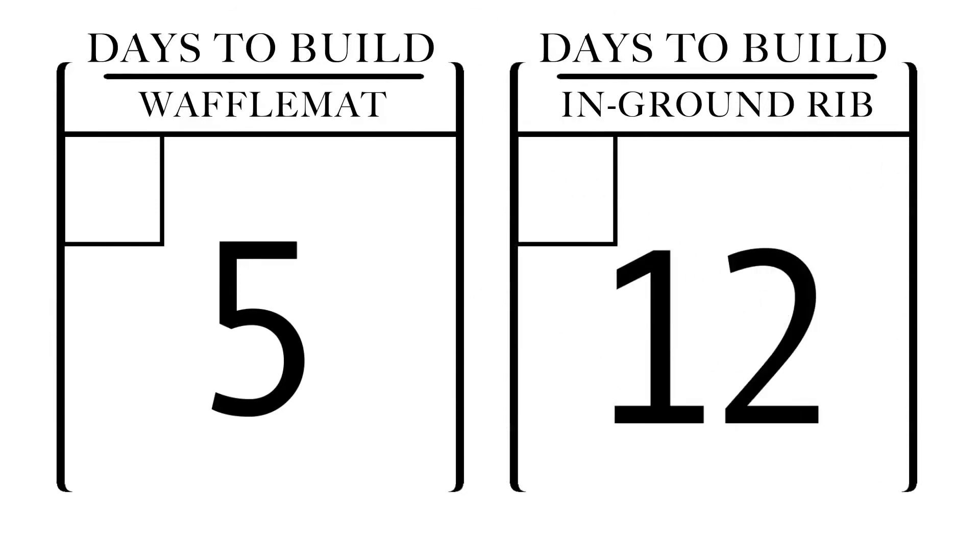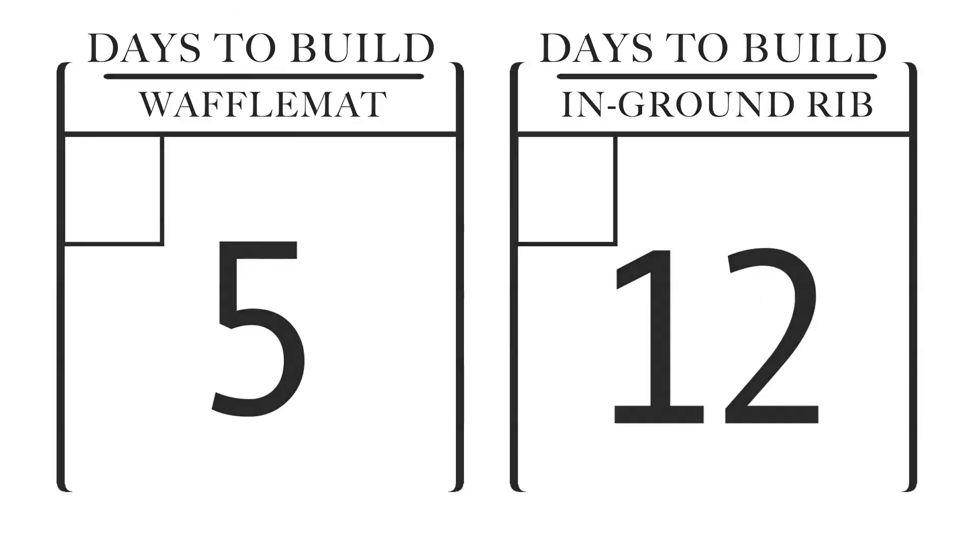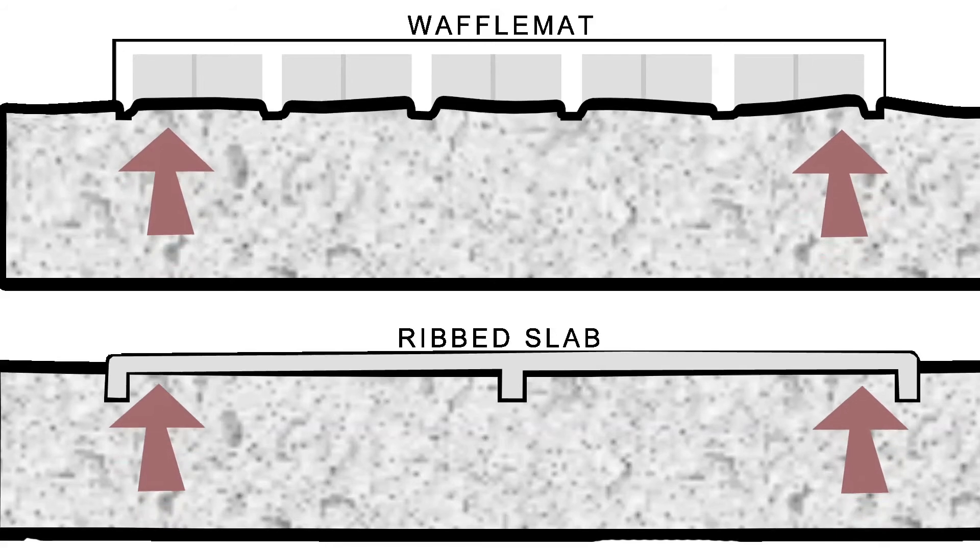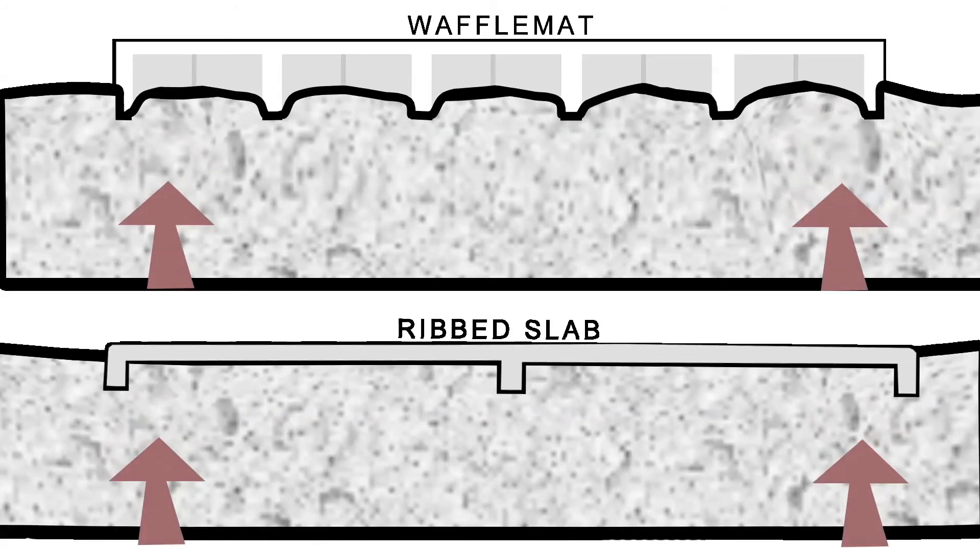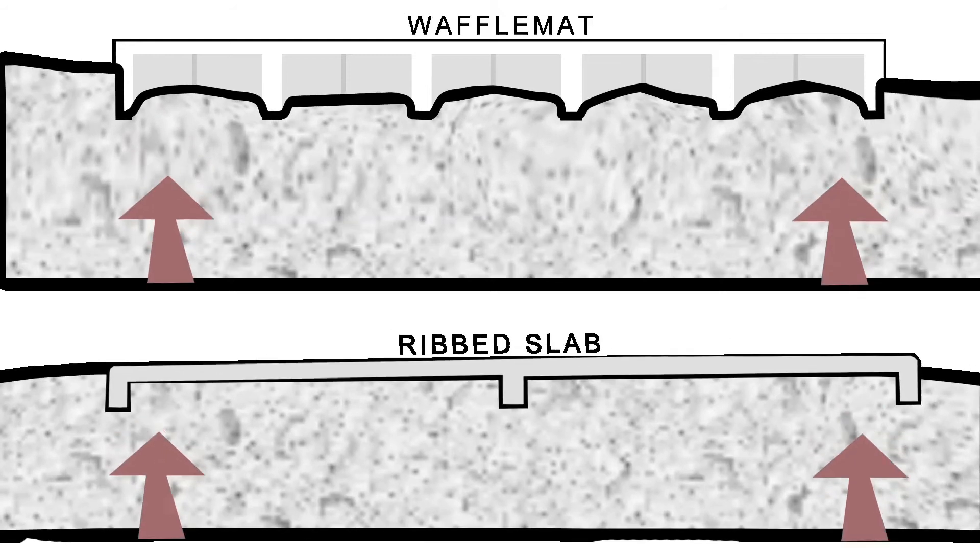Finally, the in-ground rib slab has no voids to accommodate any movement of soils, a major difference when compared to Waffle Mat because heaving soils with no place to go can cause big problems for a foundation.